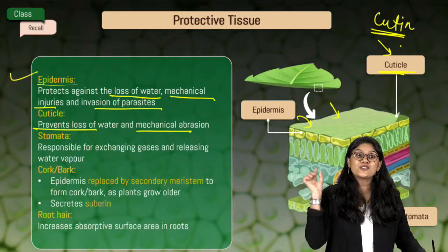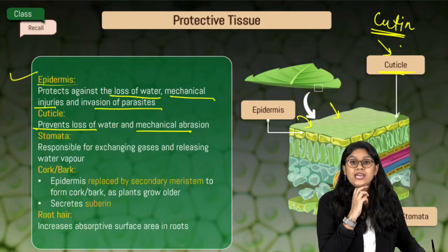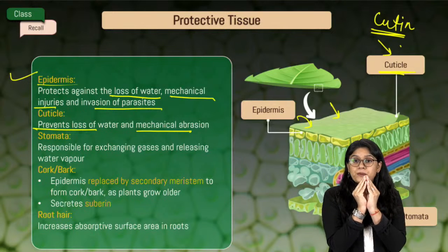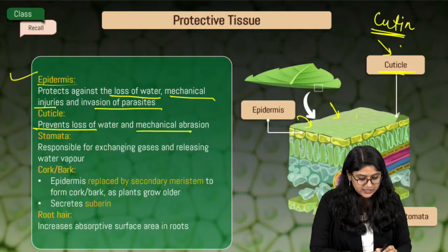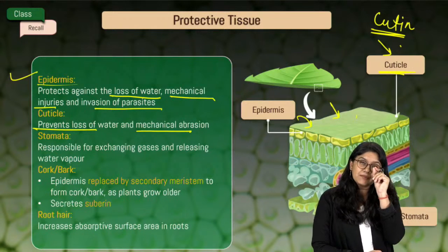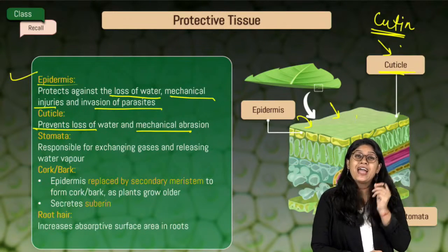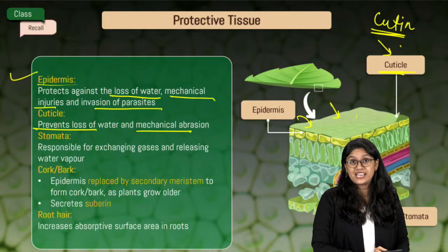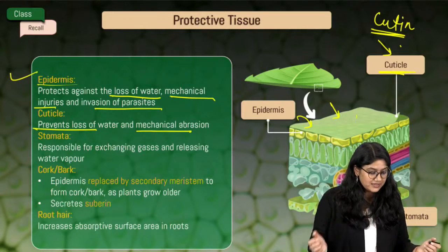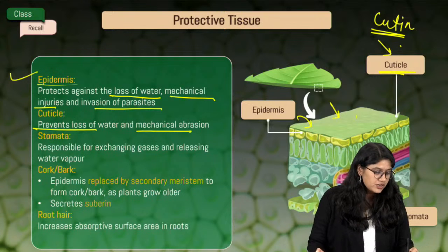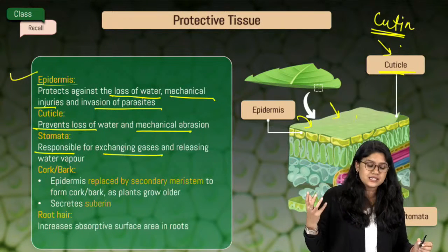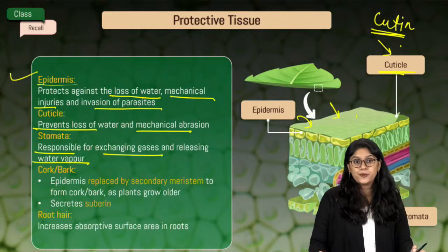On the epidermis we have stomata — tiny little microscopic openings that play a very important role in the exchange of gases as well as water. They are responsible for exchanging gases and releasing water vapours.